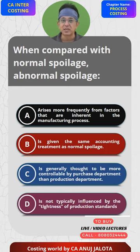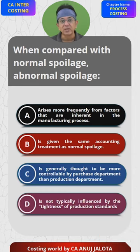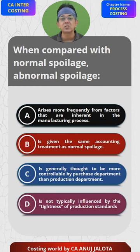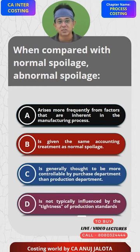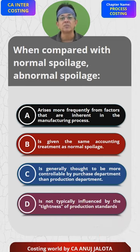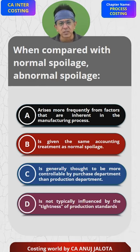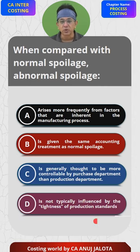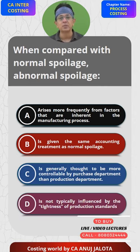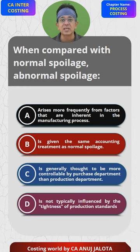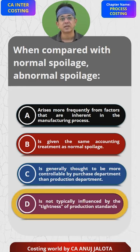The standards set for the production department will try to influence normal loss, because normal loss is built inside these standards — it is a loss we all know in advance will happen. Abnormal loss, however, is not influenced by whatever standards are set. It is a loss that happens beyond normal loss and is only known to us once the period is over. So option D makes the most sense — A, B, and C do not make sense. D is the correct answer.